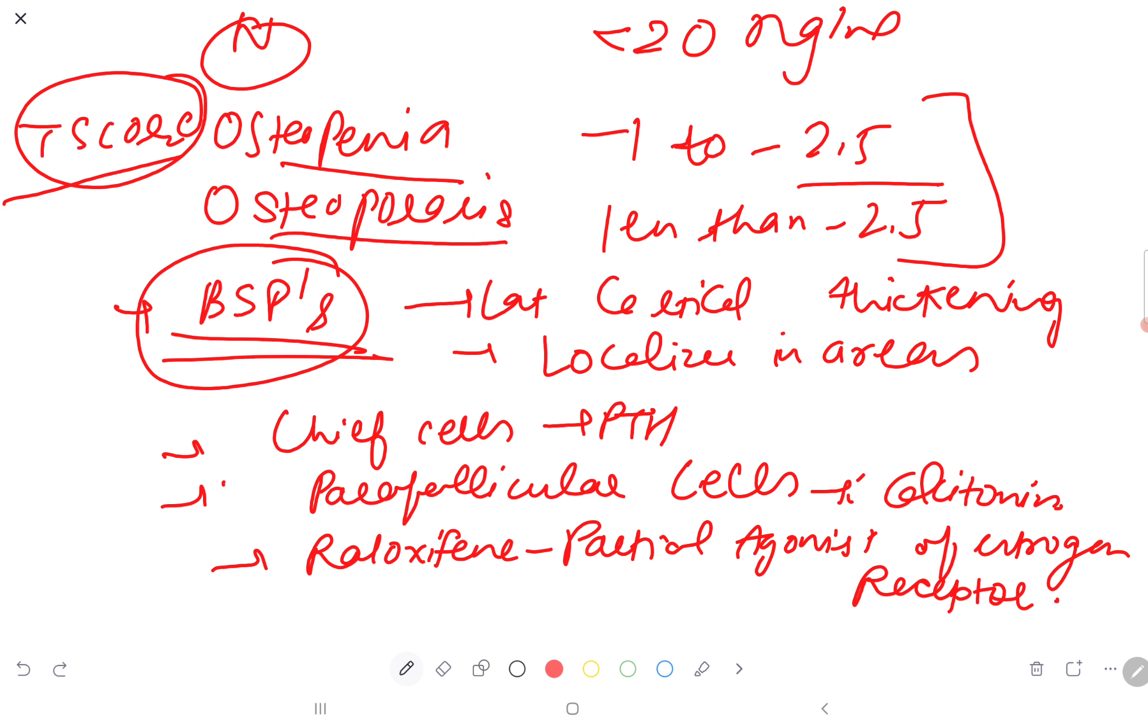Bisphosphonates cause lateral cortex thickening and localized areas that develop stress fractures. Chief cells produce PTH, parafollicular cells produce calcitonin, and raloxifene is a partial agonist of estrogen receptor.